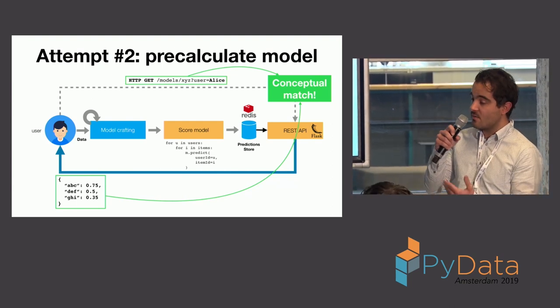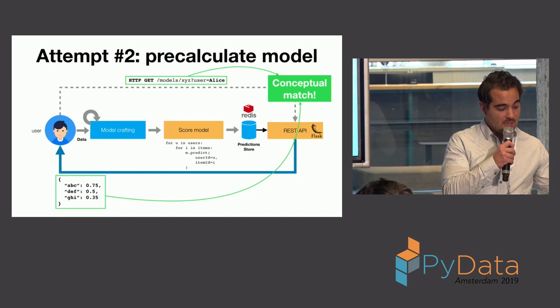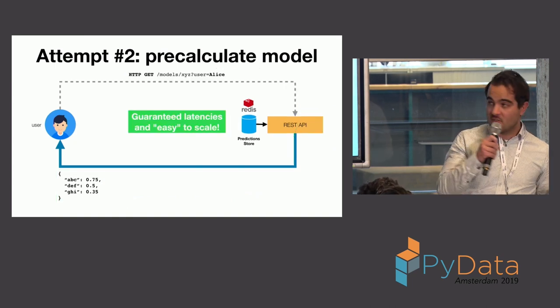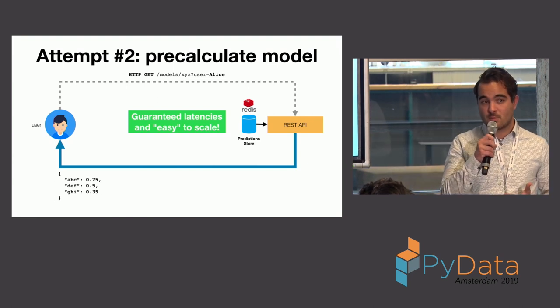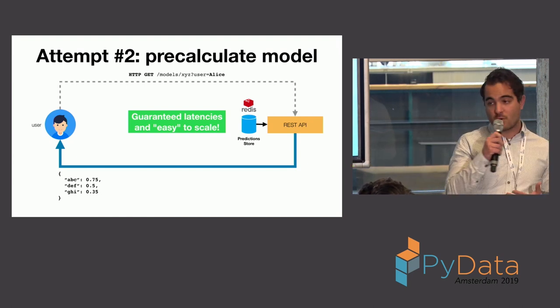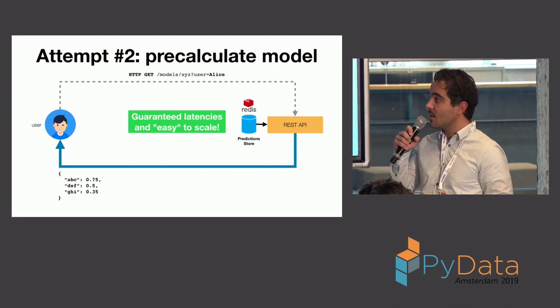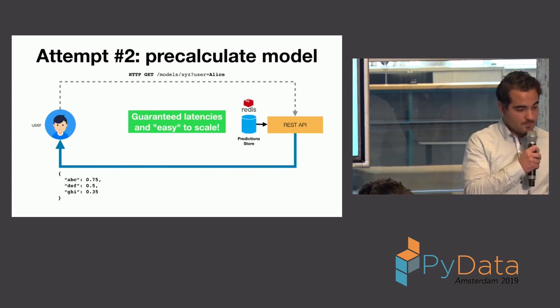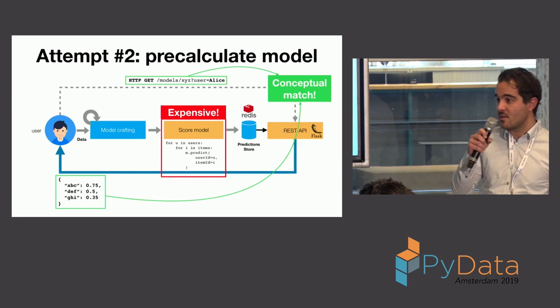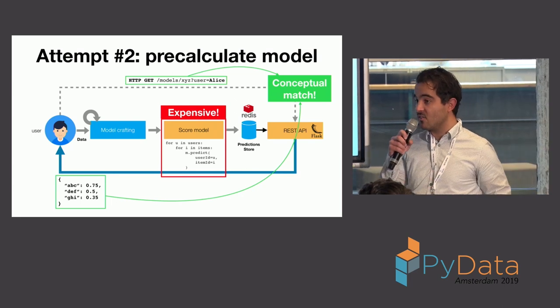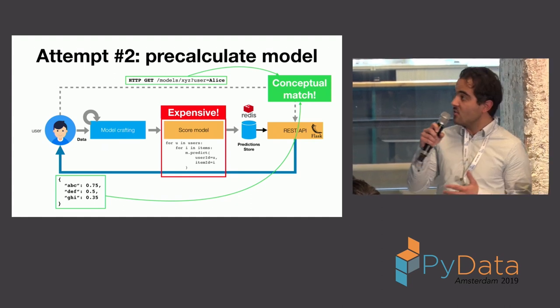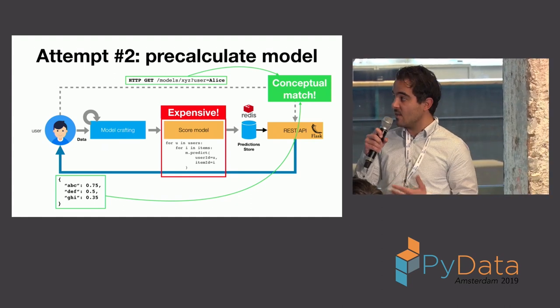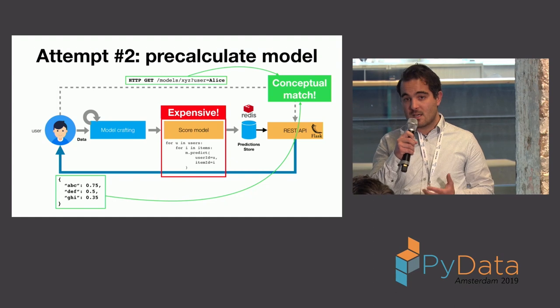So, another very nice property of this is that I can now guarantee latencies, and it's relatively easy to scale this sort of setup. So, now I can deal with my 14,000 requests per minute. The only problem, obviously, is that I've introduced another very expensive process, which is having to calculate all these different combinations of uses and items.